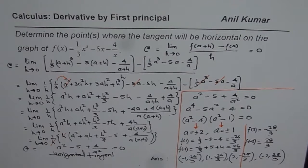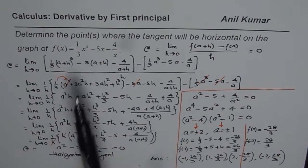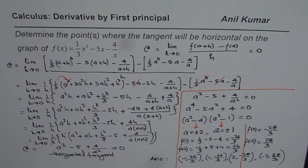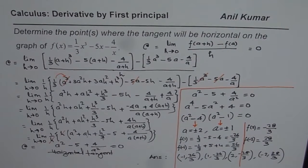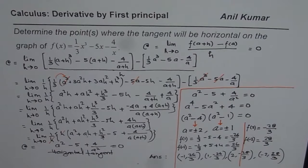So those are the four points where the graph of this function has a horizontal tangent. I hope the concept is absolutely clear. This is a very important question covering rate of change, limits, and derivatives using first principles. I am Anil Kumar — subscribe to my videos and learn a lot. Thank you and all the best.